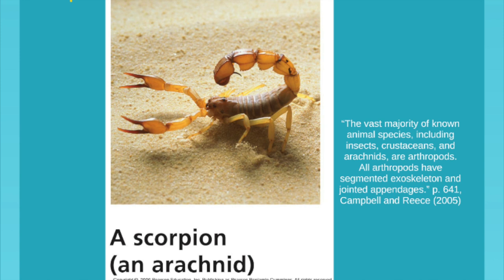All right, 9th grade, what is an arthropod? Characteristics of arthropods: a typical arthropod is a segmented, coelomate, invertebrate animal with bilateral symmetry, an exoskeleton, and jointed structures called appendages.